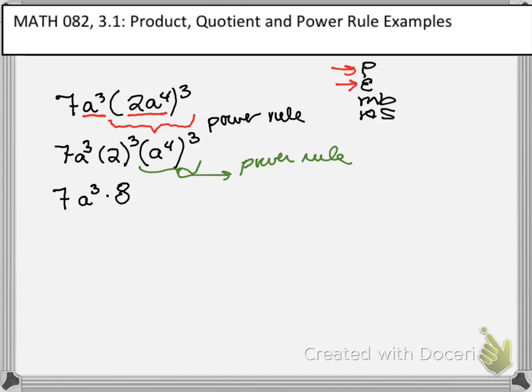If you forget how to do the power rule, you can go back and watch my video on the power rule. But the power rule basically says that you are multiplying these two exponents. So that becomes a to the 12th.